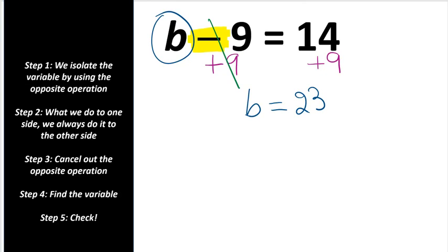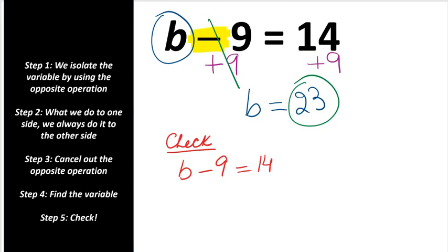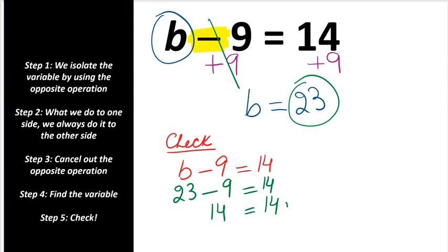Let's check our work. Copy down the equation and substitute 23: 23 minus 9 equals 14. 14 equals 14 — the right side equals the left side. Give yourself a check mark.